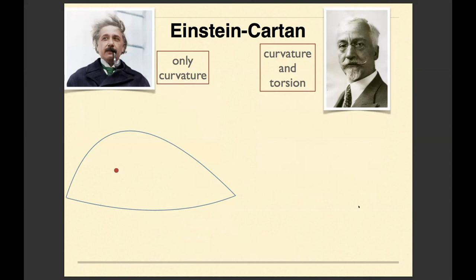Because soon after Einstein's general relativity was proposed, mathematician Élie Cartan realized that the geometry used by general relativity can be actually generalized.